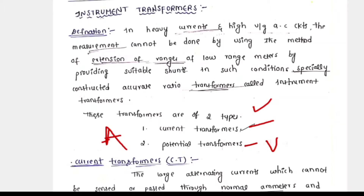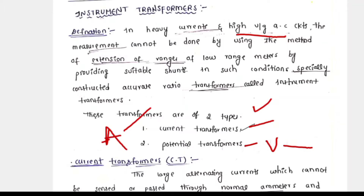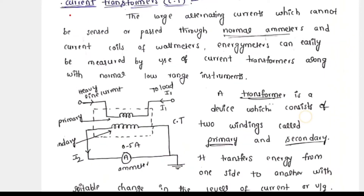Actually, to extend the range of a meter — suppose an ammeter measures 10 amps and you want to measure 1000 amps — you can use shunts and multipliers to extend the range of an ammeter or voltmeter. But in heavy current, high voltage circuits, measurement cannot be done by this method of range extension, because huge losses will appear. Hence we use transformers with the instruments — that means meters — those transformers are the current transformer and potential transformer.